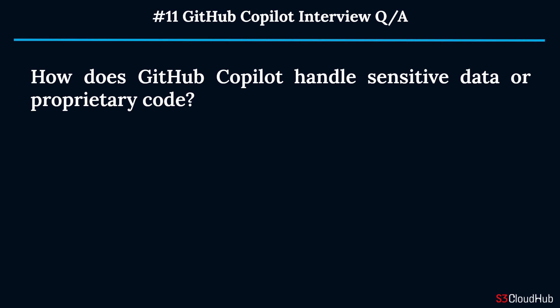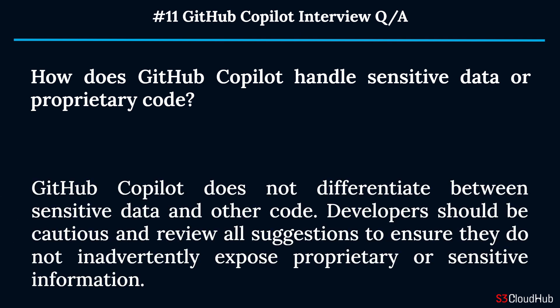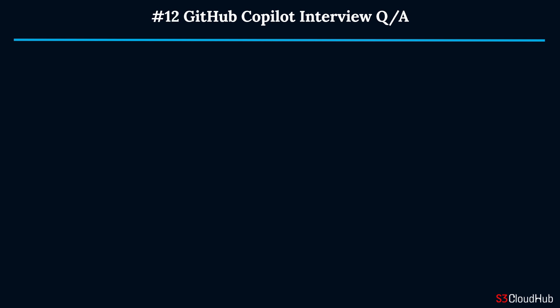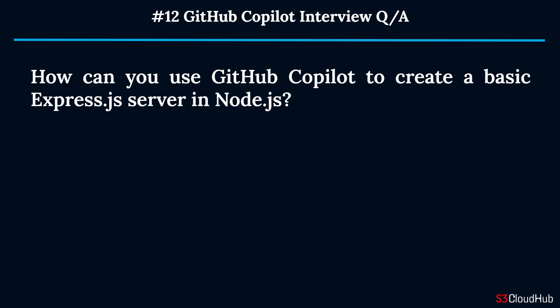Question eleven: How does GitHub Copilot handle sensitive data or proprietary code? GitHub Copilot does not differentiate between sensitive data and other code. Developers should be cautious and review all suggestions to ensure they do not inadvertently expose proprietary or sensitive information.